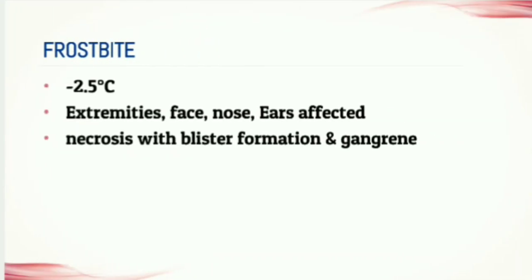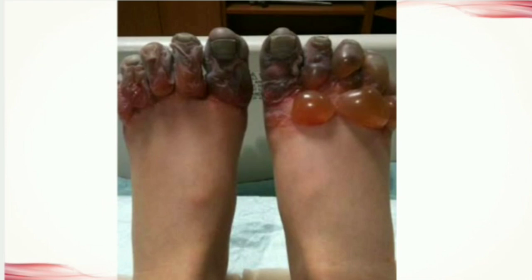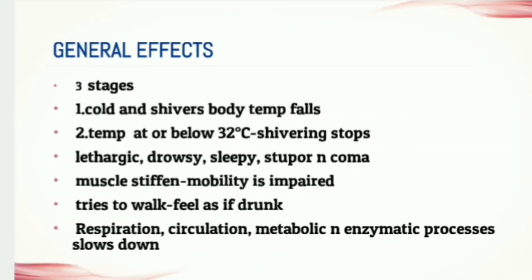The second local effect is frostbite. It occurs due to exposure to extreme cold, that is about minus 2.5 degrees Celsius. In addition to the extremities, it affects other parts like the nose, ears, and face. In frostbite, necrosis with blister formation and gangrene formation can occur. You can see the frostbite picture here — the blisters, the gangrene, and necrosis are all visible.